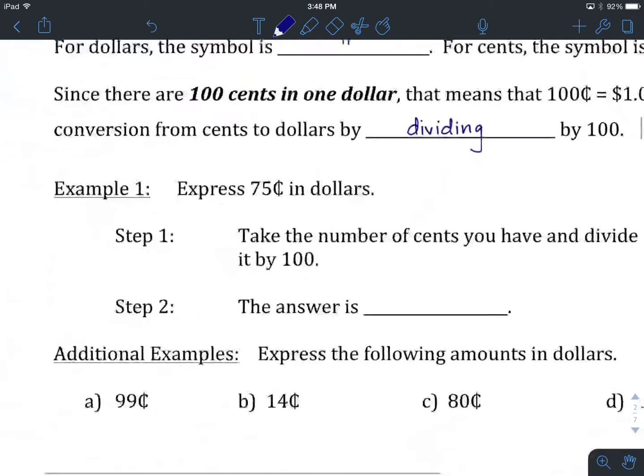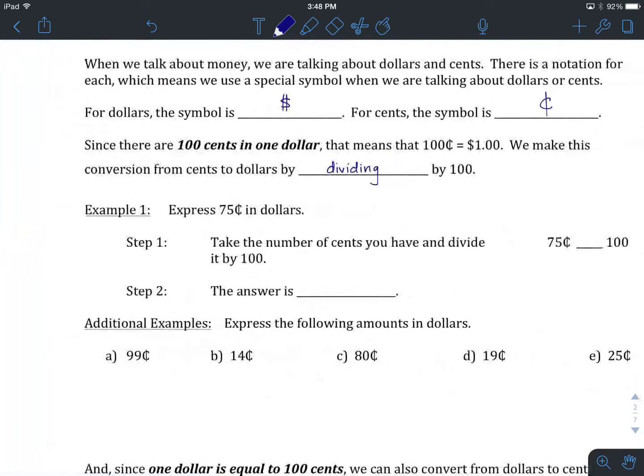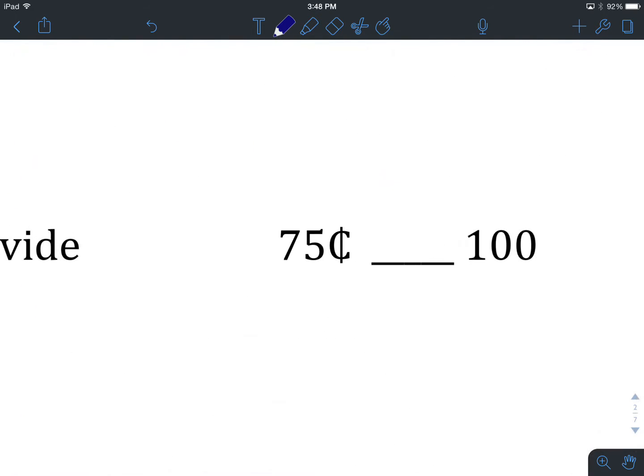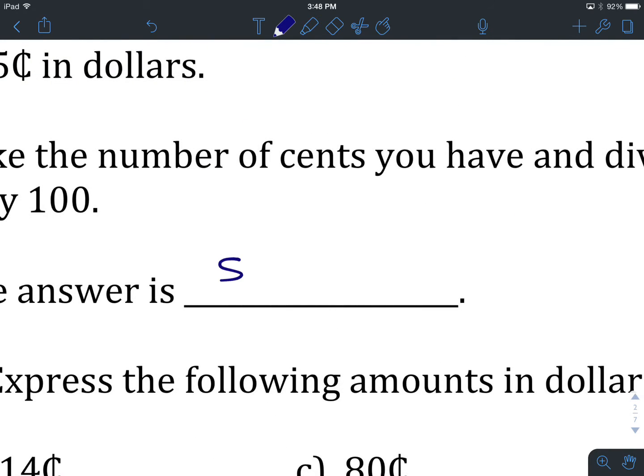Let's look at example number one. We want to express 75 cents in dollars. We take the number of cents that you've been given and divide it by 100. So we've been given 75 cents. Because we're going from cents to dollars, we divide by 100. That results in an answer that is in our new notation, which is dollars. 75 divided by 100 is 0.75, so we have $0.75.